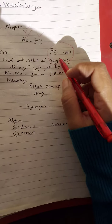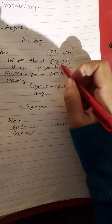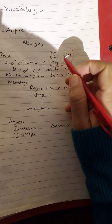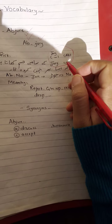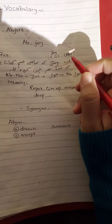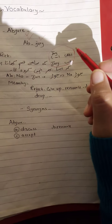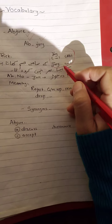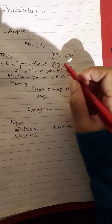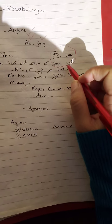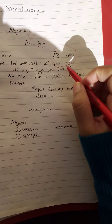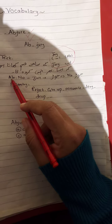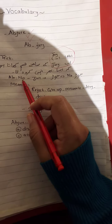So here, 'I will not do this' means you are going to deny something, or you are going to escape from something, or you are giving up something. You can use this trick to memorize the word. The other trick: 'ab' means 'no.'